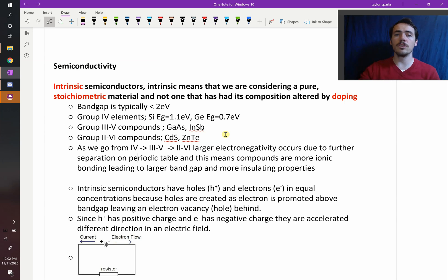Or you could go things like two and six, group two and group six, so cadmium and sulfide, zinc and tellurium. And these all will produce intrinsic semiconductors.